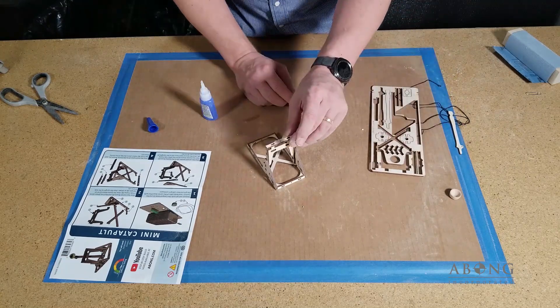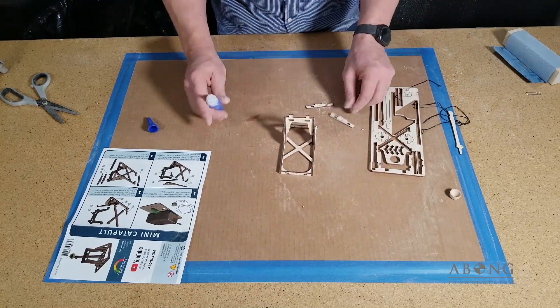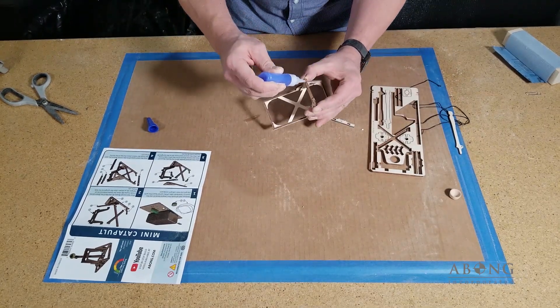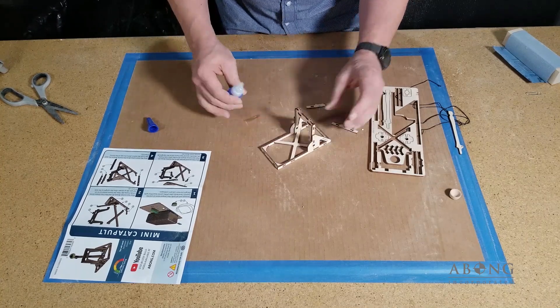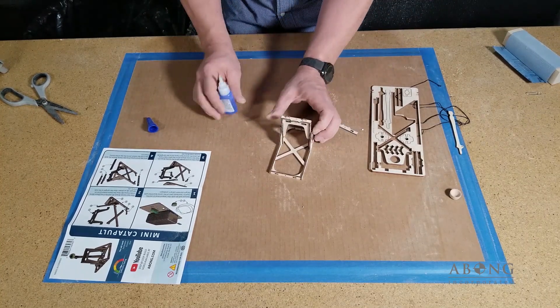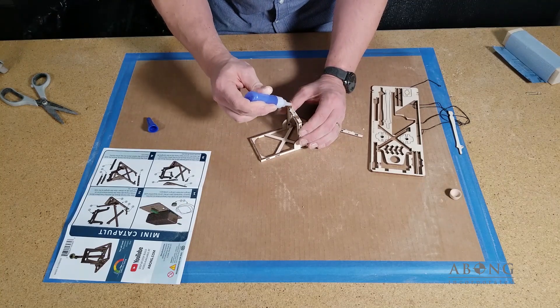So the two ends are on and now we can put on the crash bar. The crash bar gets glued to the very top of the gantry. And it goes with the two points facing towards the long end of the catapult.